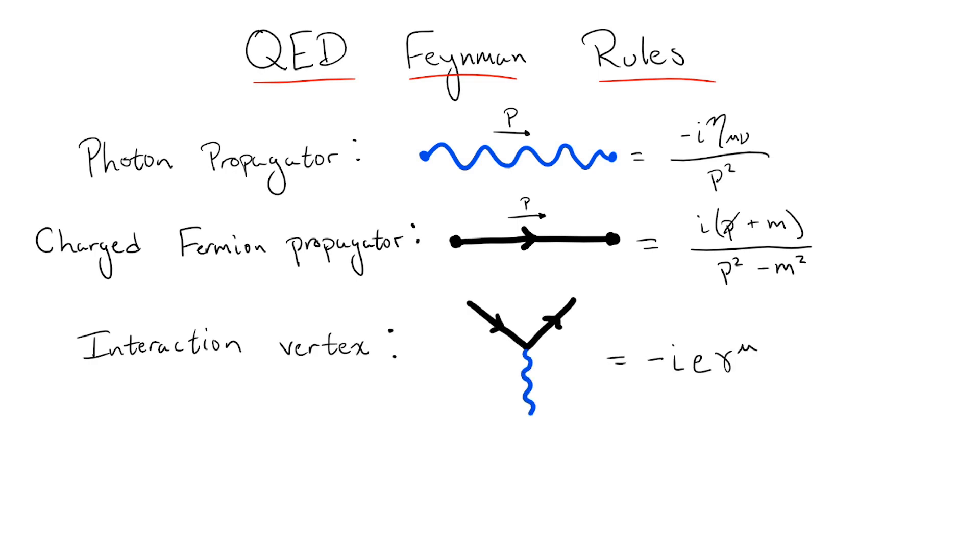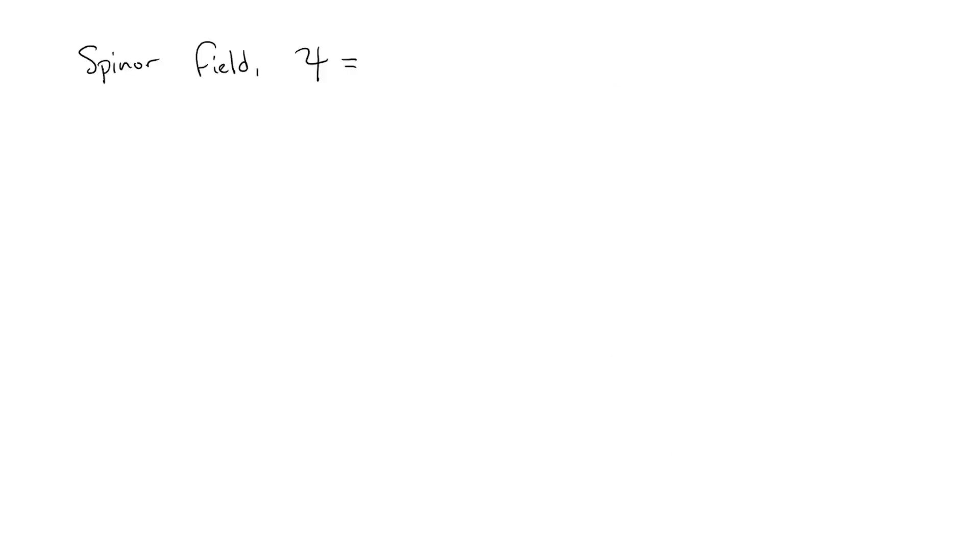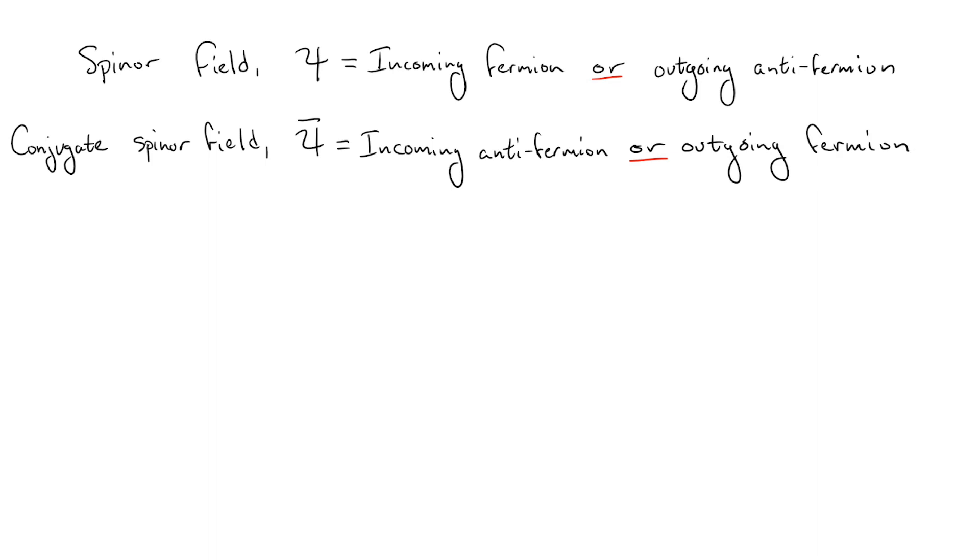The arrow on the fermion line is actually very important. We know that spinner fields can correspond to either an incoming fermion or an outgoing antifermion, while conjugate spinner fields can correspond to either an incoming antifermion or an outgoing fermion.